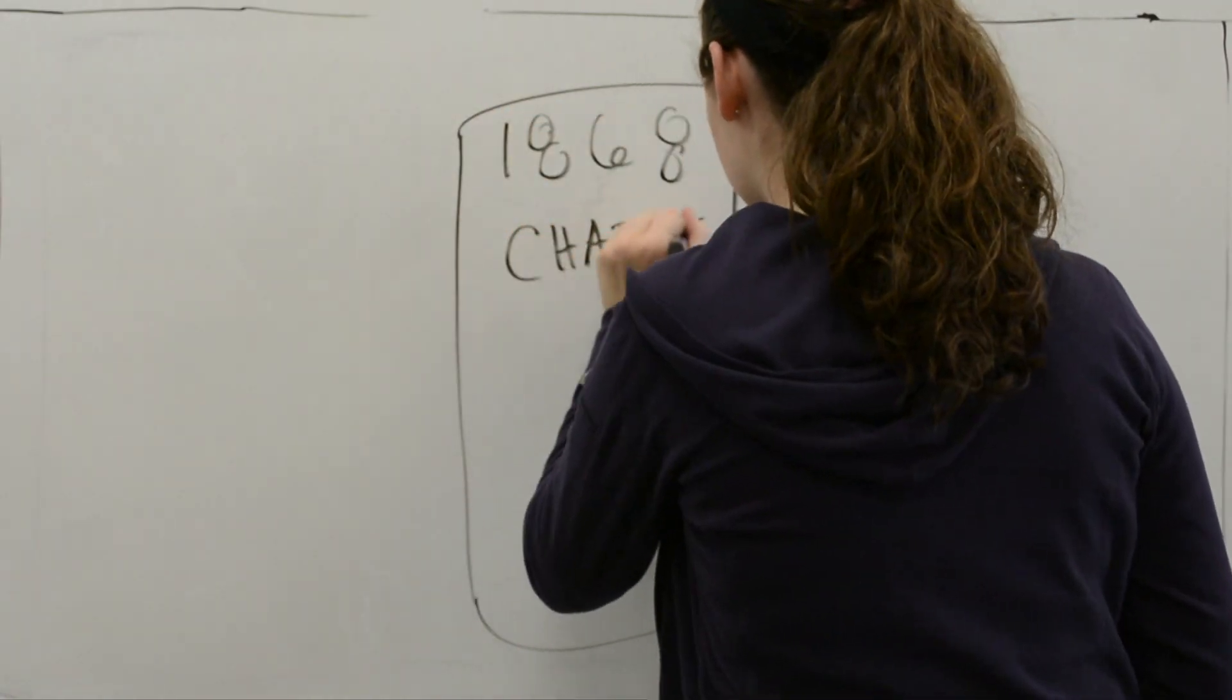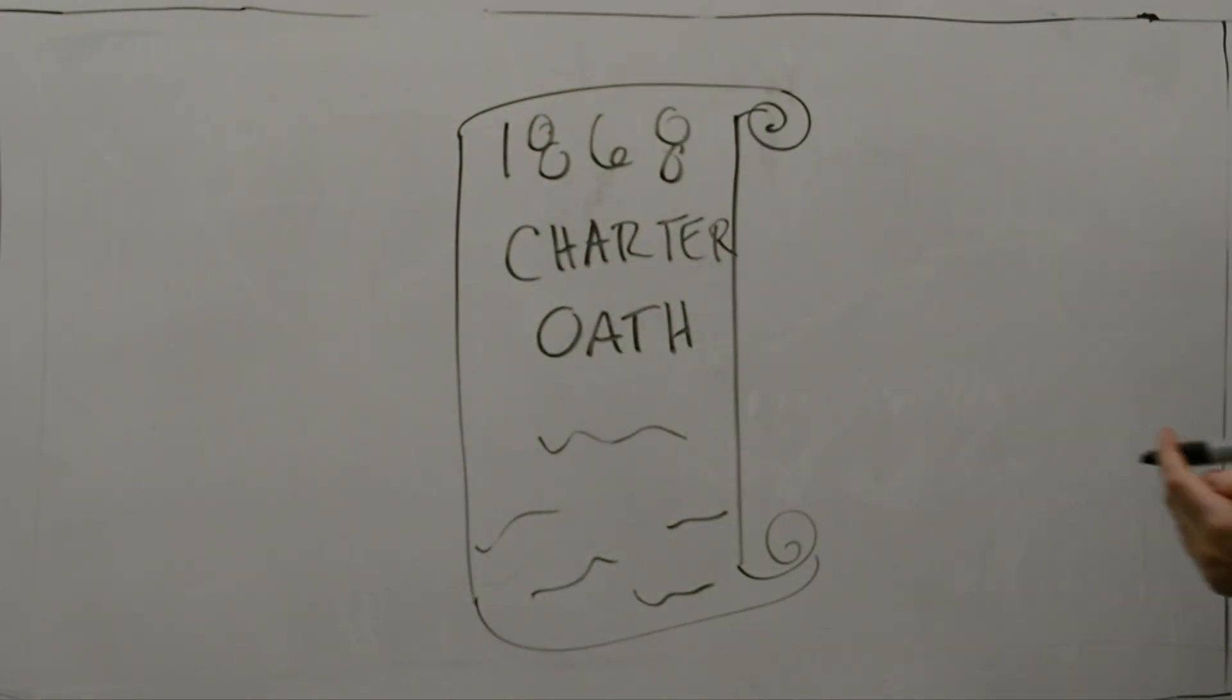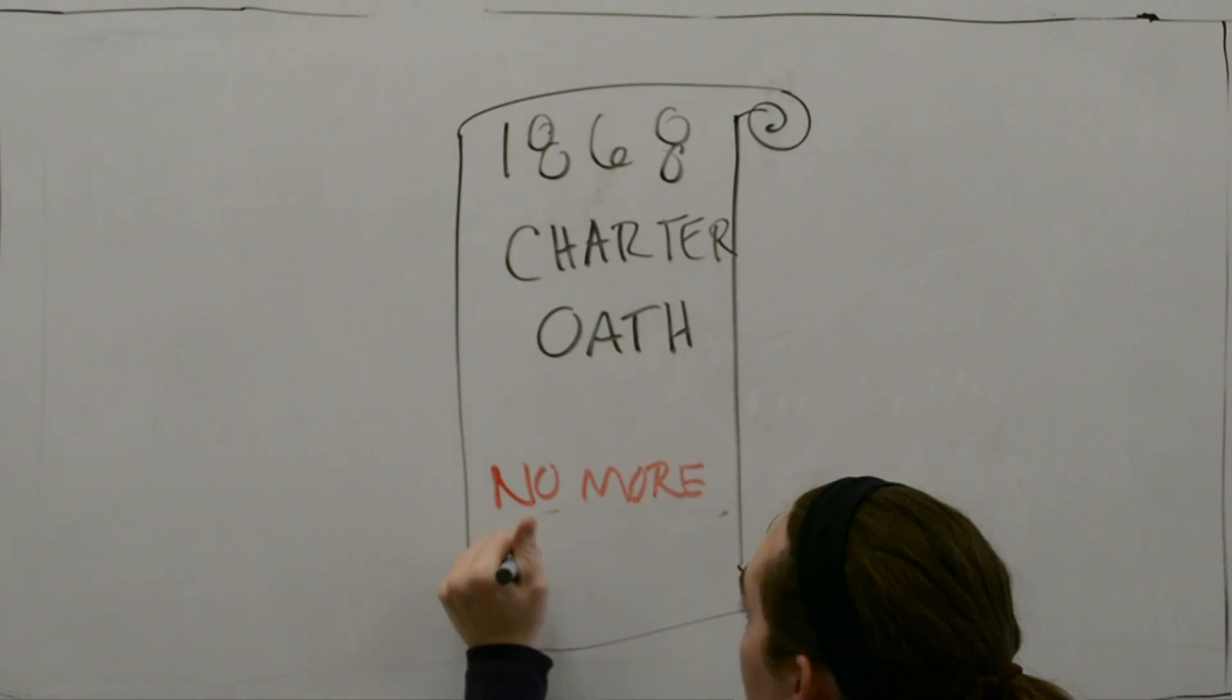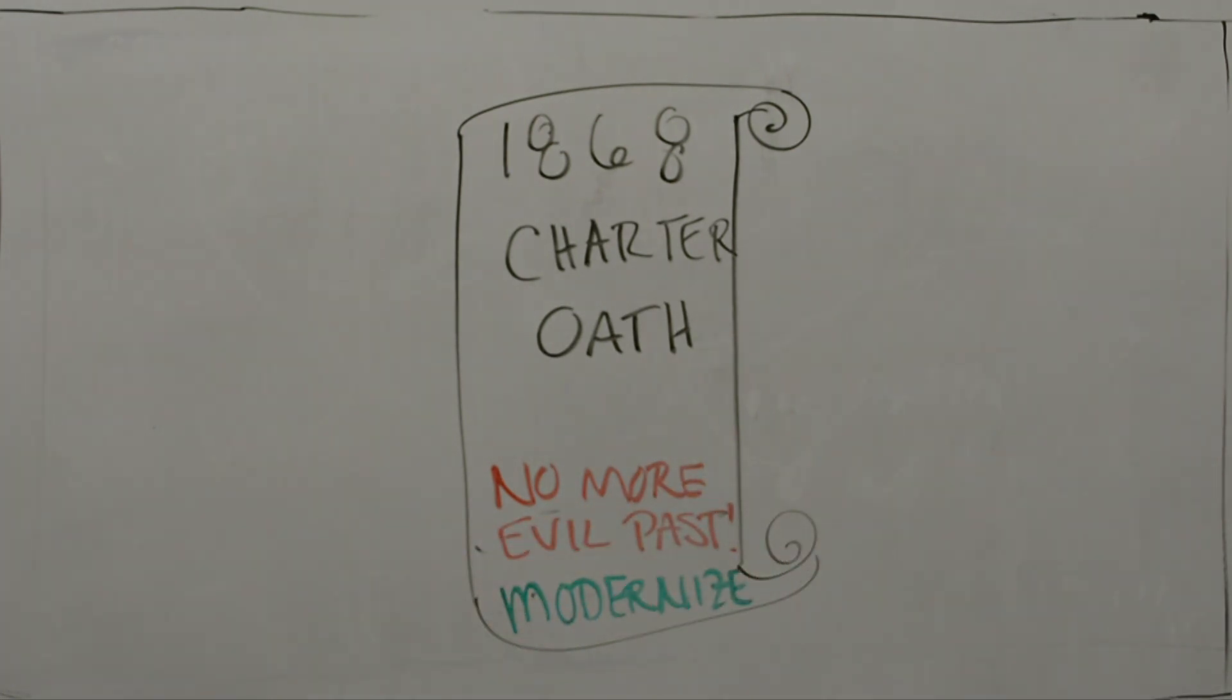The Meiji emperor started this with the Charter Oath in 1868, which intended to modernize Japan. This included instructions from the emperor that all Japanese people had to follow, such as getting rid of evil customs of the past.